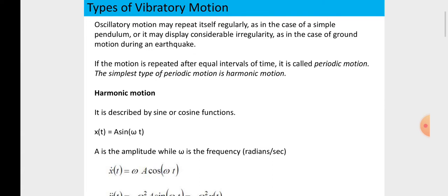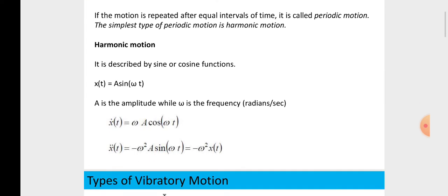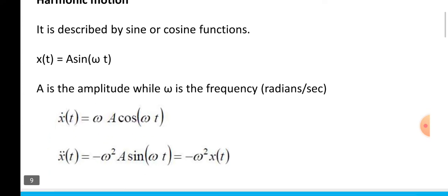It is described by sine or cosine functions. x of t is equal to A sin omega t where A is the amplitude and omega is the frequency. So, x dot t is equal to omega A cos omega t. x double dot t is equal to minus omega square A sine omega t, which equals minus omega square x of t. This is all about the derivations we are taking.